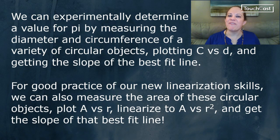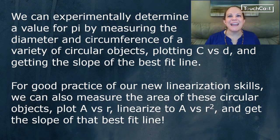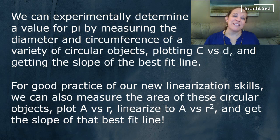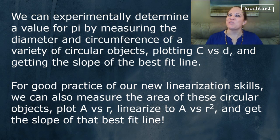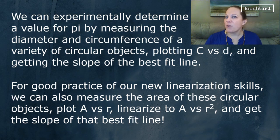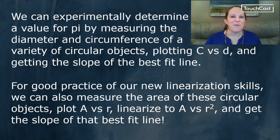We can experimentally determine a value for pi by measuring the diameter and circumference of a variety of circular objects, plot circumference versus diameter, and then get the slope of the best fit line. And for good practice of our new linearization skills, we're also going to measure the area of our circular objects, plot area versus radius, which is of course half the diameter, and then we're going to have to linearize it as area versus r squared, and we'll get the slope of that best fit line. Both of these slopes should turn out to be around 3.14.